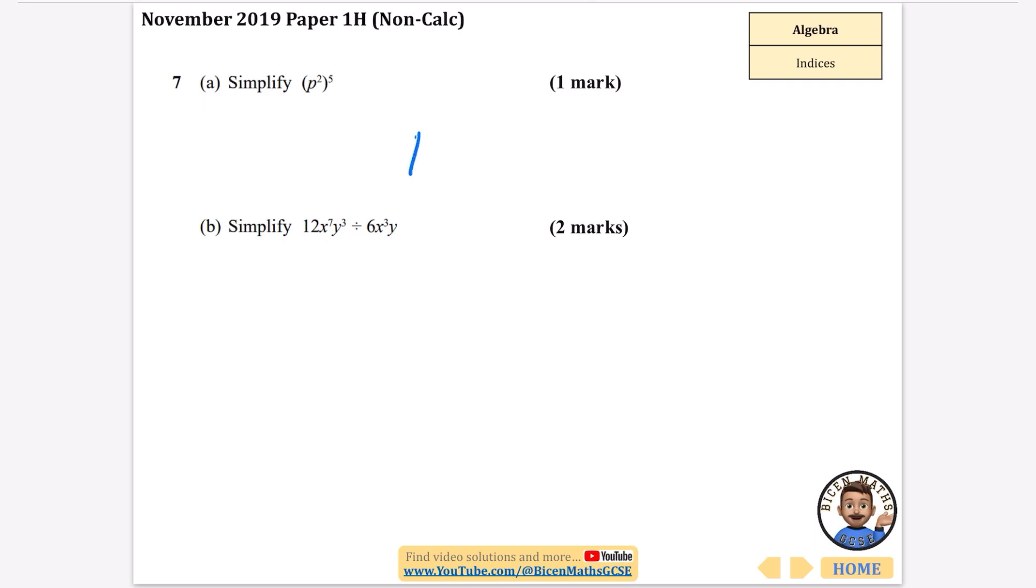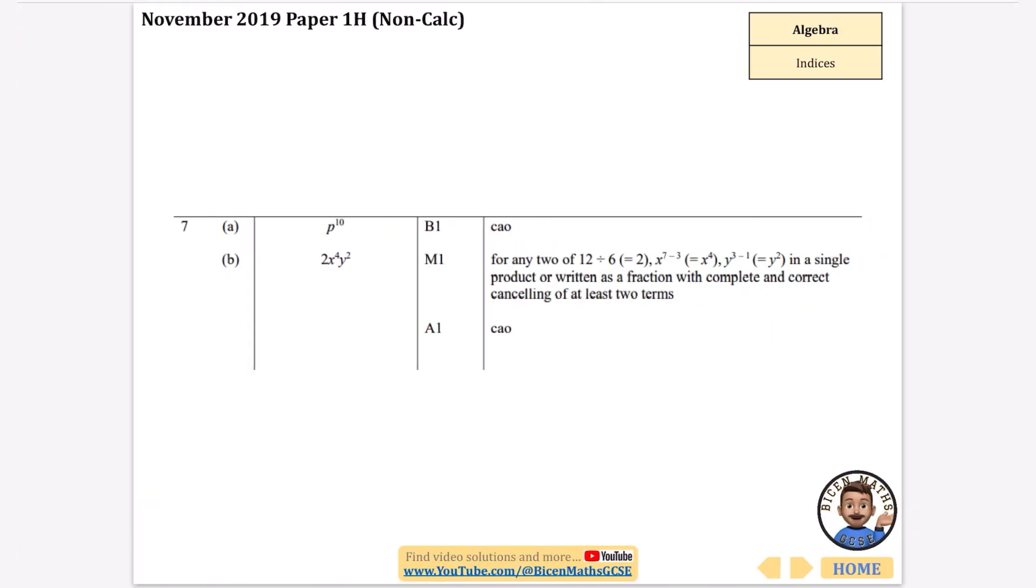We're going to simplify this. When it's brackets, you multiply the powers, so it's p to the power of 10. Okay, we're going to start off dividing the numbers here by simplifying. 12 divided by 6 is 2. x to the power of 7 and x cubed, you subtract the powers, so you get x to the power of 4. And y cubed divided by y is y squared, because obviously there's that power of 1 next to the y. So it's 2x to the 4y squared.